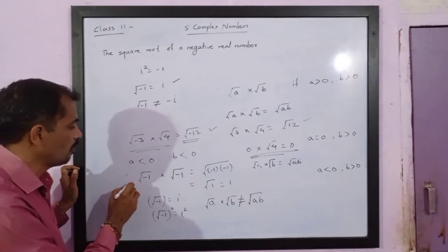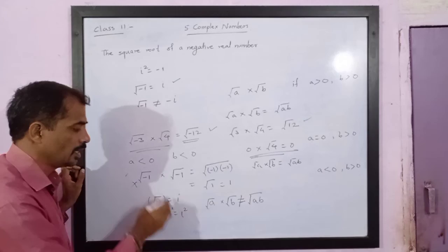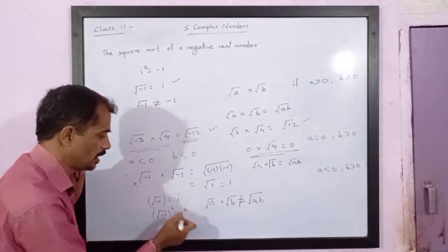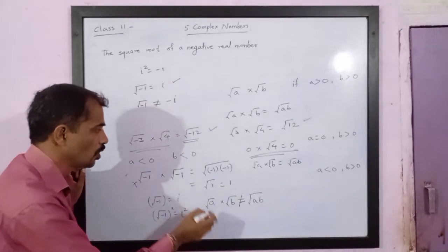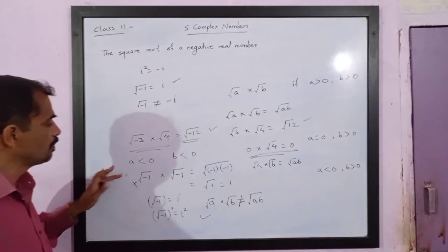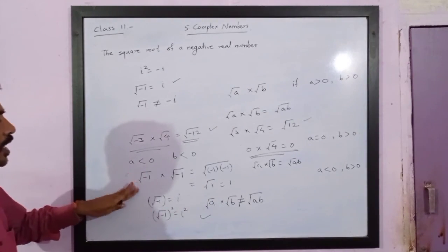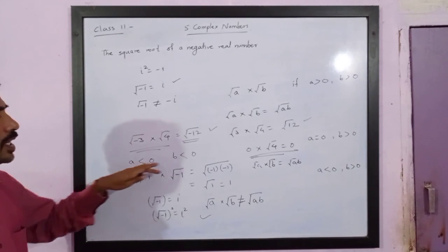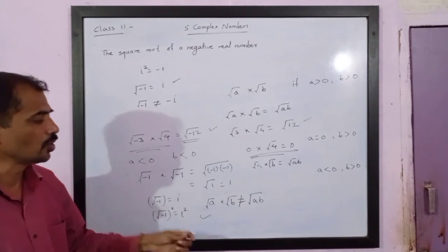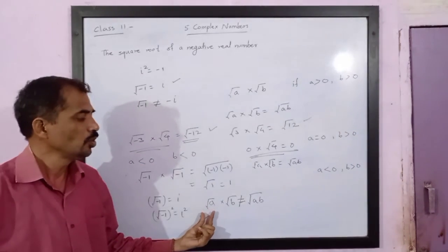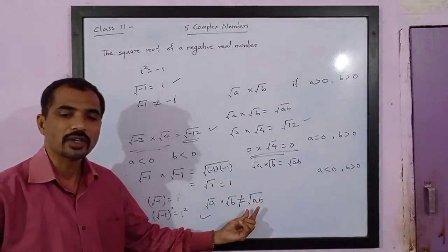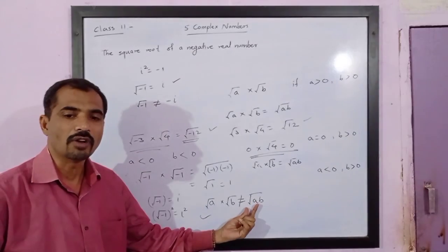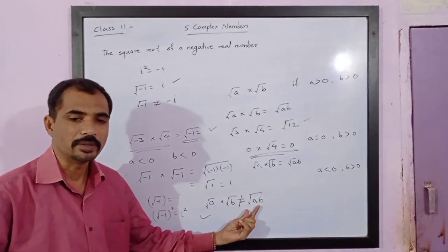Please note this important point: if both numbers a and b are less than 0, then root a times root b is NOT equal to root of ab. This is not a valid rule when both a and b are negative.